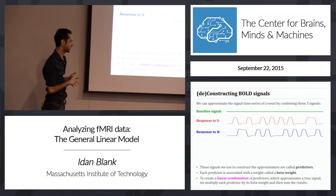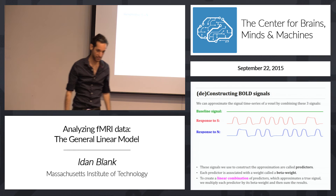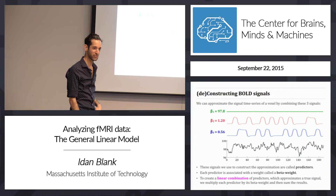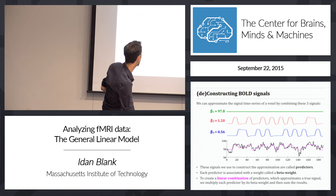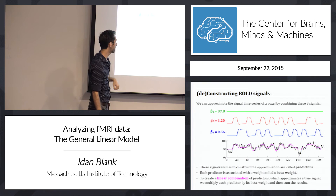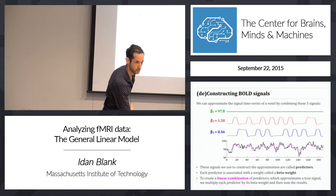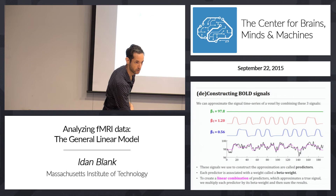To create a linear combination of predictors that approximates the true signal, I multiply each predictor by its beta weight and sum everything together. These are the betas for the language-system voxel I showed you: beta for sentences is much larger than beta for non-words — I stretched the sentence predictor by 20% and shrunk the non-words predictor by half. This voxel responds more strongly to sentences than to non-words. We can see this through these numbers, whereas we couldn't see it before.